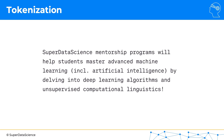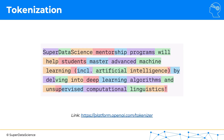When we feed this into a large language model, it's actually going to be broken up into tokens. Here you can see what the tokens look like. The name SuperDataScience is broken up into words. And then the word 'mentorship' is broken up into 'mentor' and 'ship.'